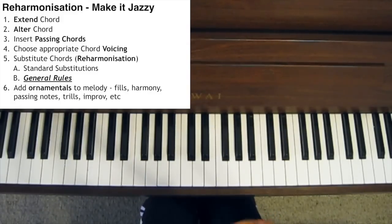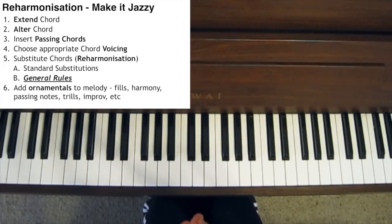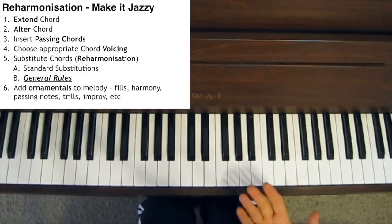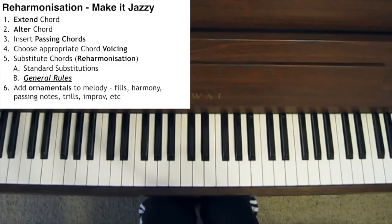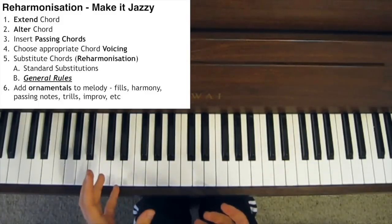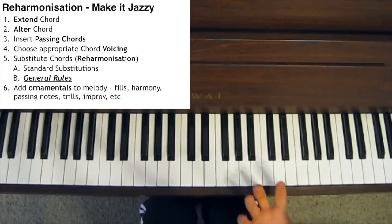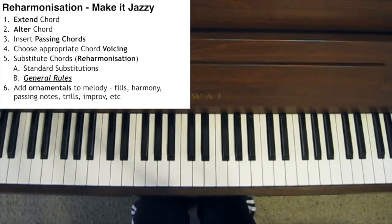In this lesson, the steps I'm going to take you through are: extending the chord, altering the chord, adding passing chords, choosing appropriate voicings, reharmonisation, and then embellishing the melody. Each of these techniques will give you a different level of jazziness — from extending the chords, which gives you a slightly jazzy sound, all the way through to reharmonising the entire chord progression, which gives you a really serious jazzy sound.